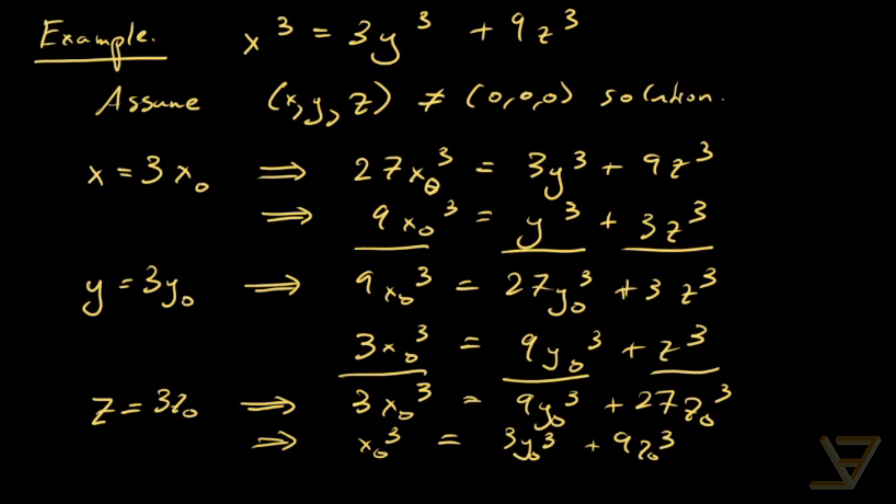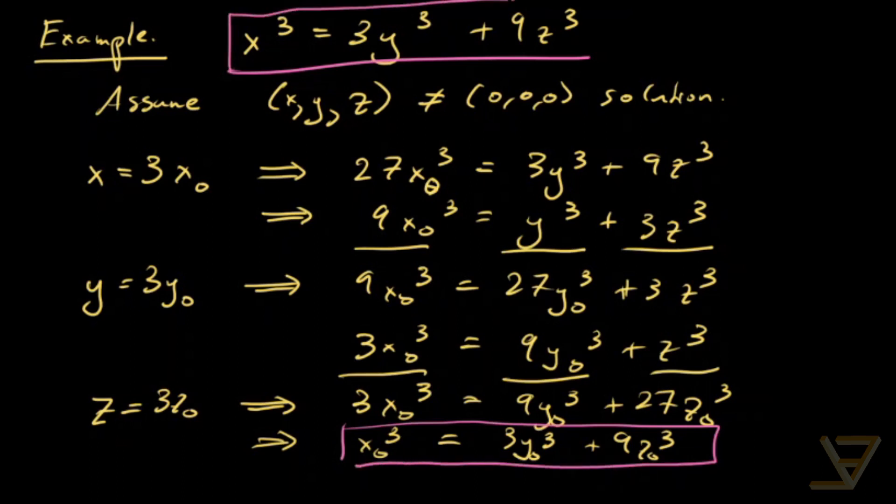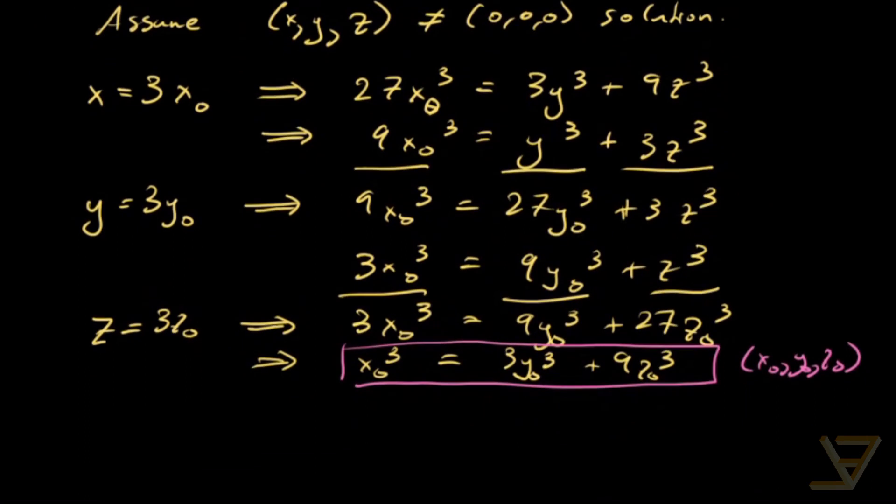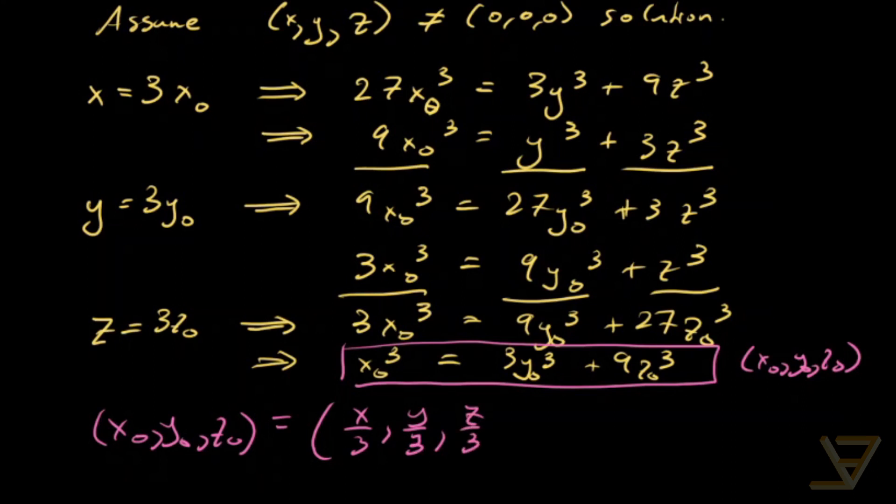And notice that the original equation and this final equation have the same form. So x_0, y_0, z_0 is also a solution. But notice that x_0, y_0, z_0 is equal to x over 3, y over 3, z over 3.